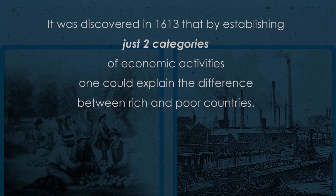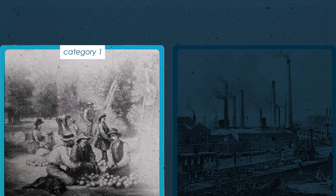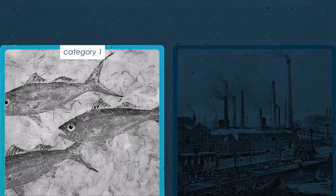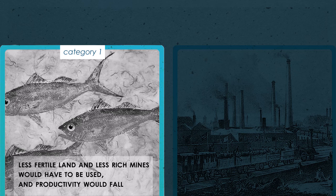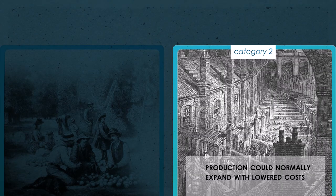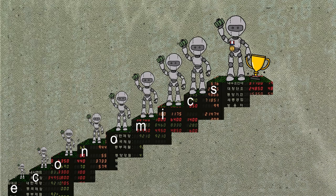It was discovered in 1613 that by establishing just two categories of economic activities, one could explain the difference between rich and poor countries. Category one was when one factor of production is determined by nature — in agriculture, in mining, or fisheries. Here, sooner or later, less fertile land and less rich mines would have to be used and productivity would fall. Category two was manufacturing industry, where production could normally expand with significantly lowered costs. In economics, the most technologically advanced countries would be in the position of the heavyweight boxers or wrestlers.